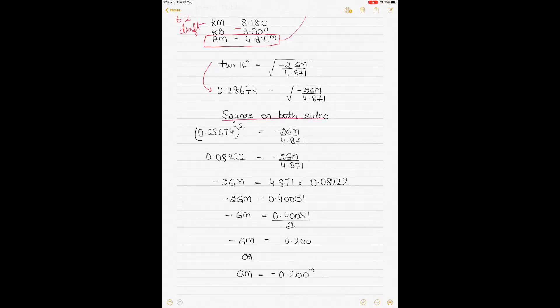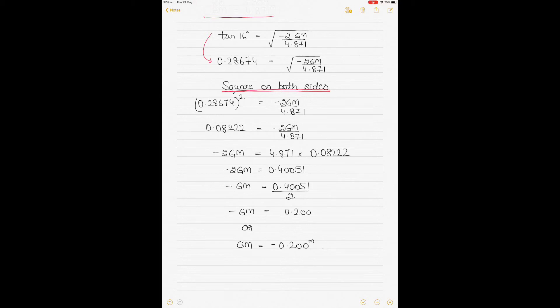But to get rid of the square root, square both sides. That is 0.28674, just square it, multiply it by the value. So when you square the left-hand side, you automatically get rid of the under root on the right-hand side. So basically you are squaring both the sides. So just multiply 0.28674 by itself and you will get 0.08222. Then of course you have minus 2 GM by BM here. Take the BM on this side here. You get 4.871 multiplied by 0.08222, and then solve the equation like how I've shown you, and you will get the GM value of negative 0.200 meters.